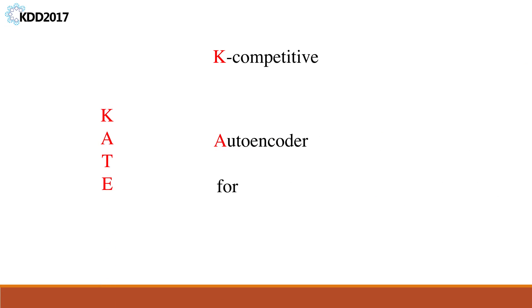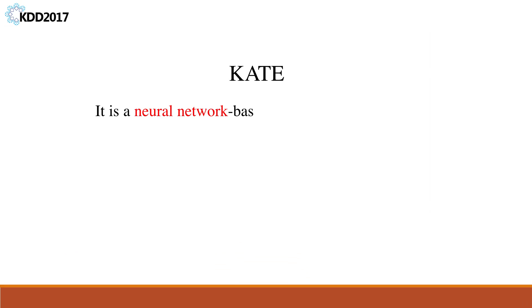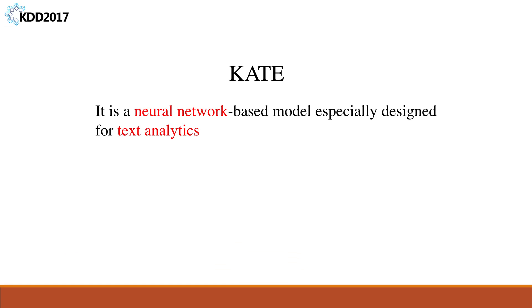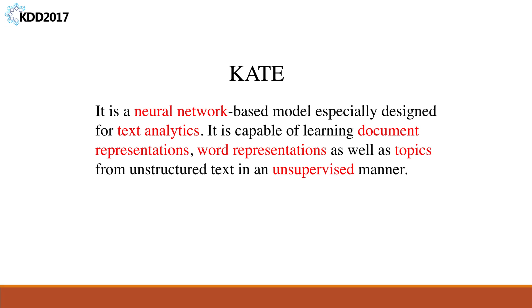What is KIT? KIT stands for K-Competitive Autoencoder for Text. It is a neural network-based model especially designed for text analytics. It is capable of learning document representations, word representations, as well as topics from unstructured text in an unsupervised manner.